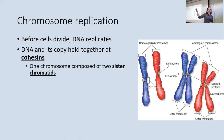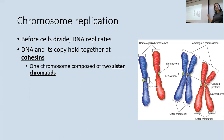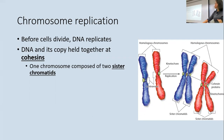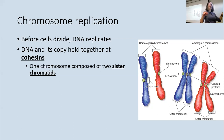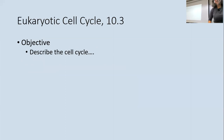The original chromosome and its copy are held together at the centromere by a protein called cohesin. The original chromosome and its copy are called sister chromatids. So each homologous chromosome is now made of two sister chromatids. When the cell divides, these two sister chromatids come apart and each goes into one of the new cells, so we end up passing along exactly what we started with.